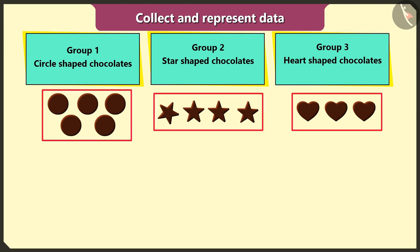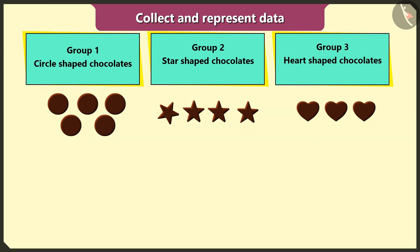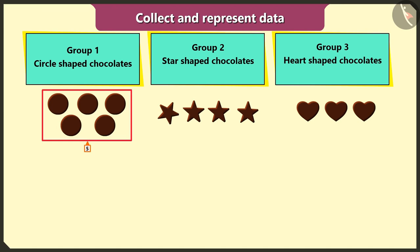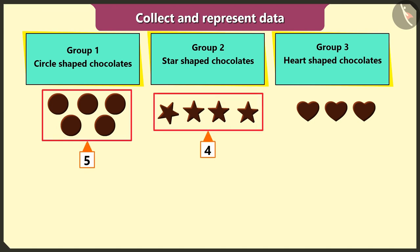Now I will count the chocolates in each group. In the first group, five circle shaped chocolates. In the second group, four star shaped chocolates. And in the third group, there are three heart shaped chocolates.